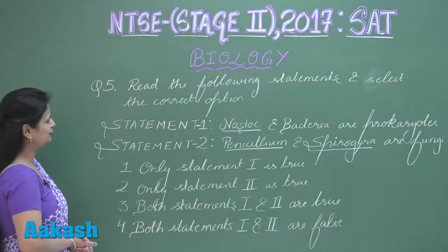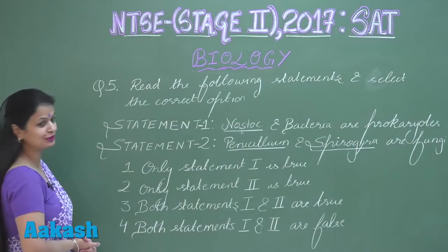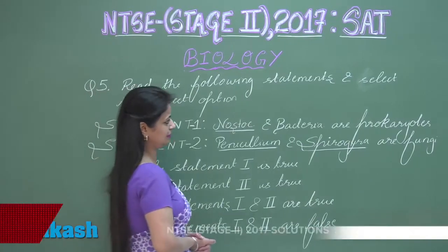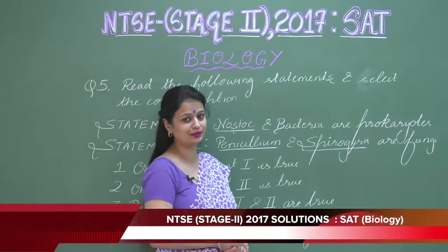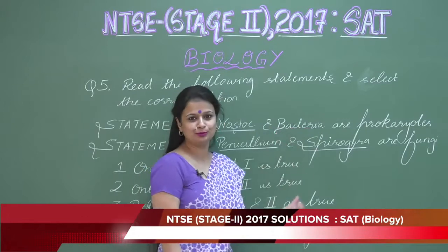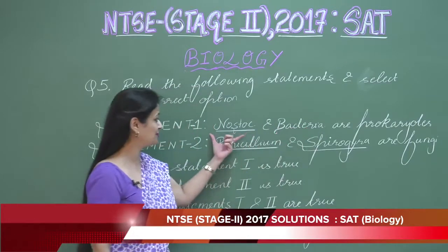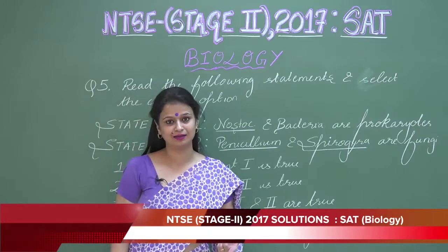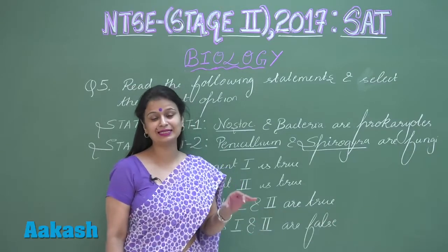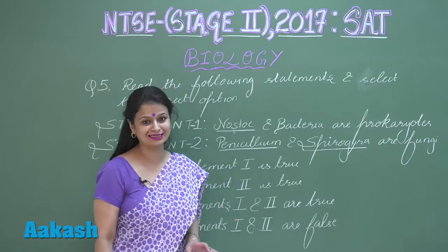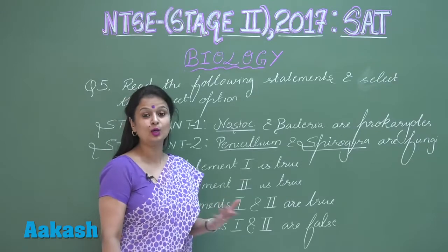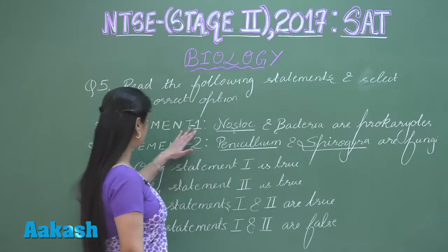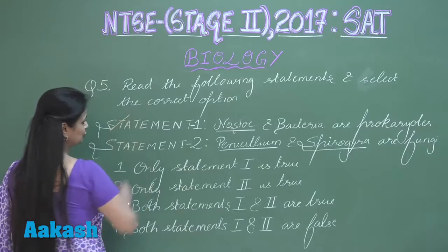This is question number five. We have to look for the correct option. Statement one: Nostoc and bacteria are prokaryotes. Bacteria are prokaryotic, and Nostoc is also a prokaryotic alga. It comes under the category of cyanobacteria, which is also known as blue-green algae. So this is the right statement.